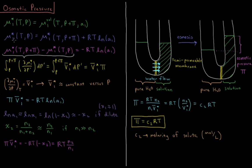The chemical potential of pure water equals the chemical potential of pure water at that temperature and pressure P plus π, plus RT times the natural log of its activity coefficient. This is our expression for the activity of our water in solution at this pressure on the right side.